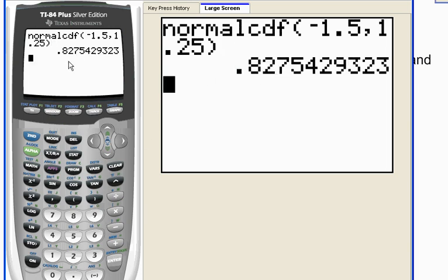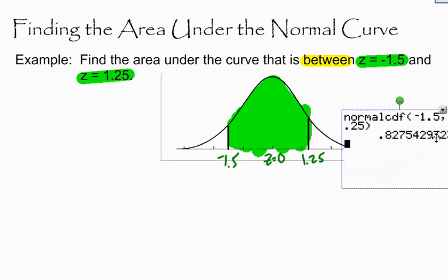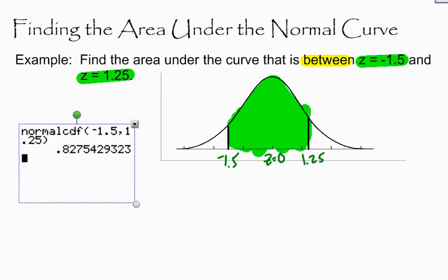It gives me the area between those two z-scores. So the area between the shaded region right here, the area between these two z-scores is 0.8275. I always like to go four decimal places when I'm finding the area under the curve.